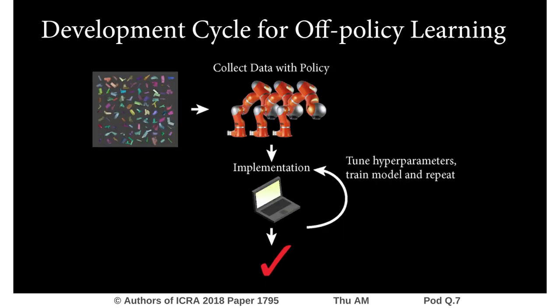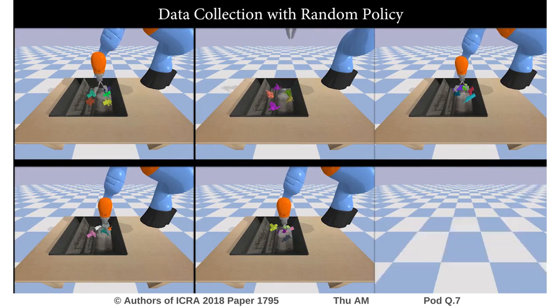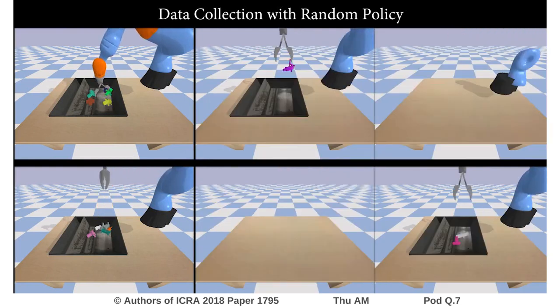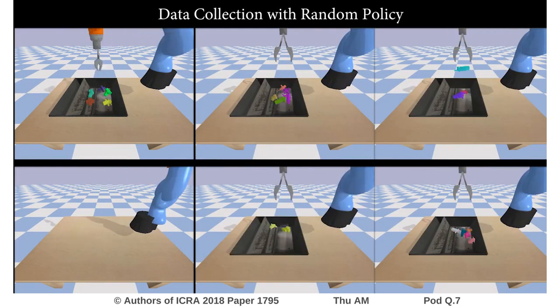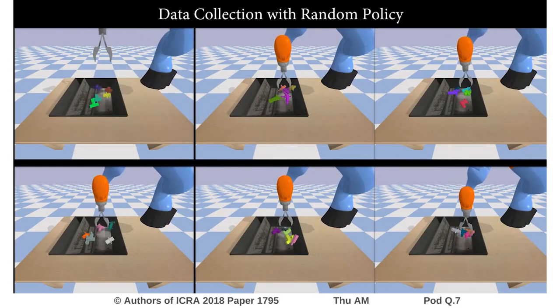On the other hand, off-policy, value-based algorithms allow us to continually train on past data and avoid the forgetting problem. To this end, we collect one million grasps on procedurally generated meshes using a random policy.